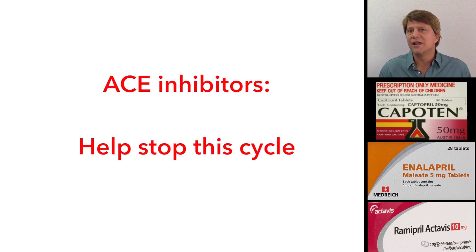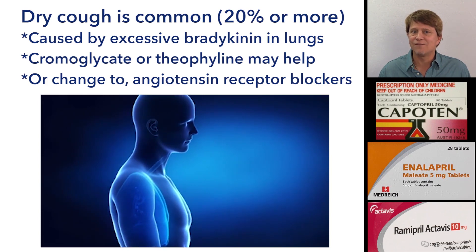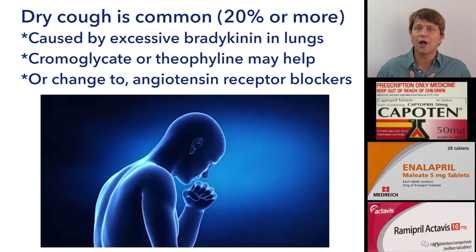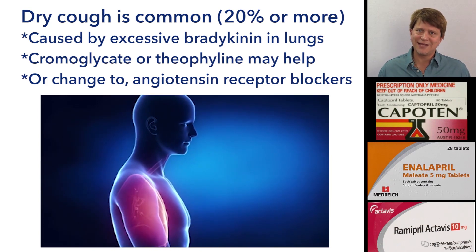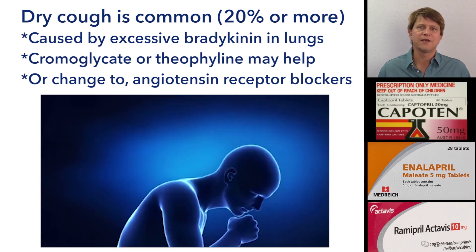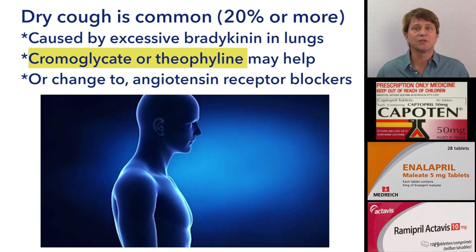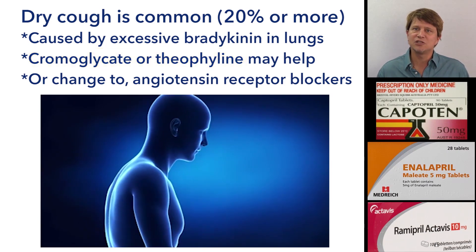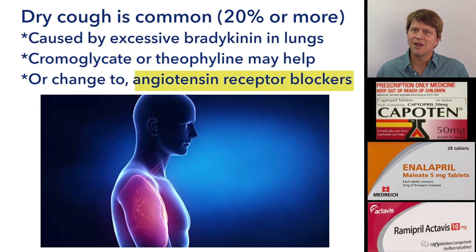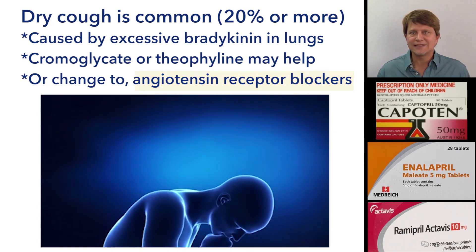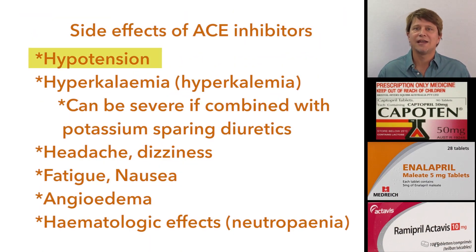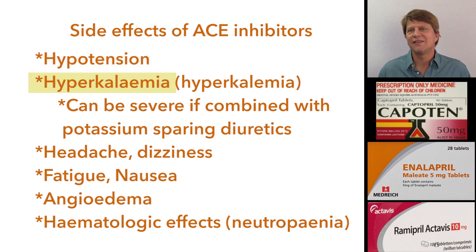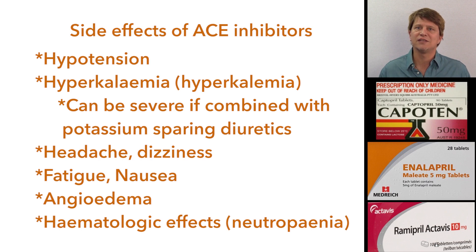Some of the common adverse effects of the ACE inhibitors include a chronic dry cough. This chronic dry cough has the possibility of being resolved by a couple of different medications, but if it cannot be resolved, the person will most likely be put on the angiotensin II receptor blockers. Other adverse effects include hypotension and hyperkalemia — increased levels of potassium in the blood — which is exacerbated if the person is simultaneously on potassium-sparing diuretics.